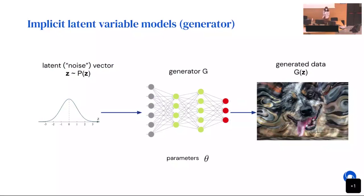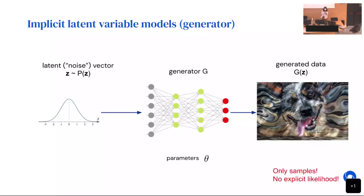These models sample first from a prior that we choose — often a lower-dimensional Gaussian distribution. For very high dimensional images, the size of Z is probably something like 128. We sample from this Gaussian prior, do a forward pass through a deterministic neural network, and obtain a sample. We don't get out a likelihood or even a conditional likelihood — we just have a sample.